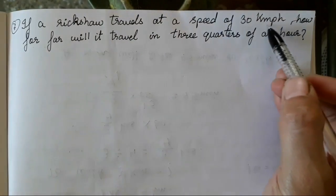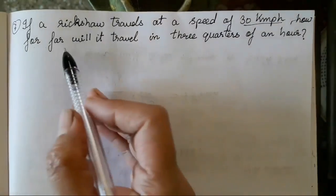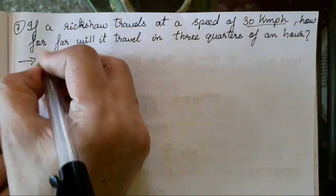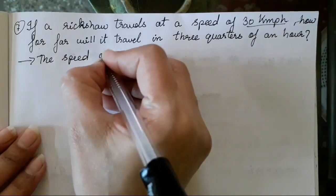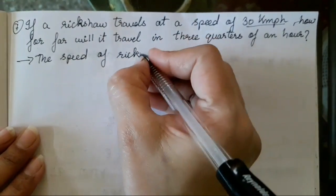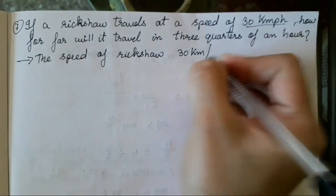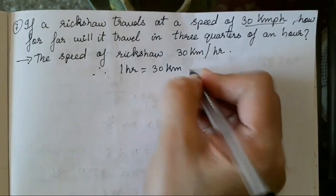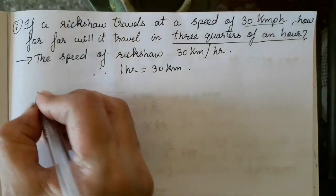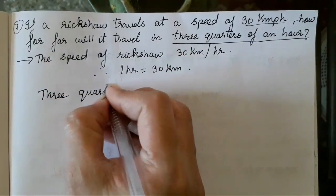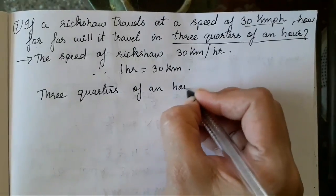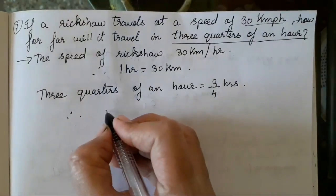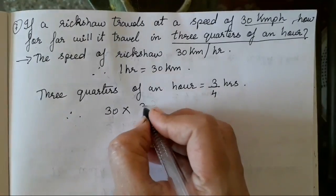Next sum: If a rickshaw travels at a speed of 30 kilometres per hour, how far will it travel in three-quarters of an hour? Write the statement: speed of rickshaw is 30 km per hour, so 1 hour equals 30 kilometres. Three-quarters of an hour is three-fourths hours.